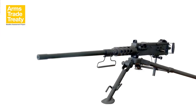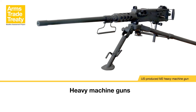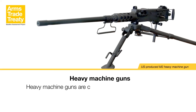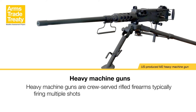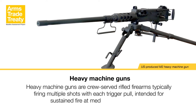Heavy machine guns are crew-served rifled firearms, typically firing multiple shots with each trigger pull, intended for sustained fire at medium (300 metres) to long (1,000 metres or more) ranges. The calibre of most contemporary heavy machine guns is in the range of 12.7 millimetres to 15 millimetres. The calibre of such weapons could be up to 20 millimetres for automatic cannon.